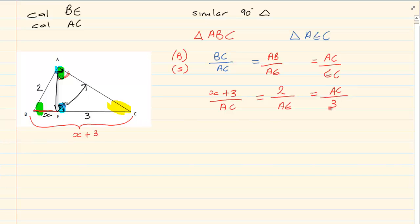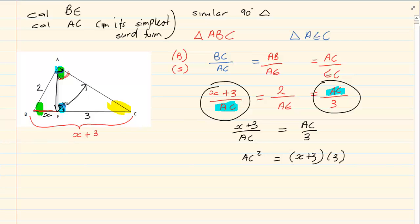Then we have AC again over EC. EC is 3. Now what would you notice? You notice that even though we have 3 unknowns, if you pay attention you notice that we have 2 ACs. So let us work with this fraction and this fraction. So we have X plus 3 over AC is equal to AC over 3. That will give us AC squared is equal to X plus 3 into 3. Now they tell us that we must calculate AC in its simplest third form. Till there we are basically stuck. So let us wait and see if we can first get BE.